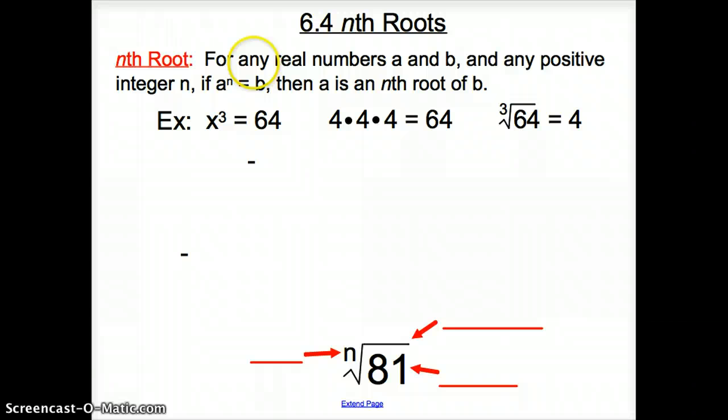An nth root is defined as for any real numbers a and b, so a and b are just numbers, and any positive integer n, n does have to be a positive number, if a to the nth equals b, then a is an nth root of b.